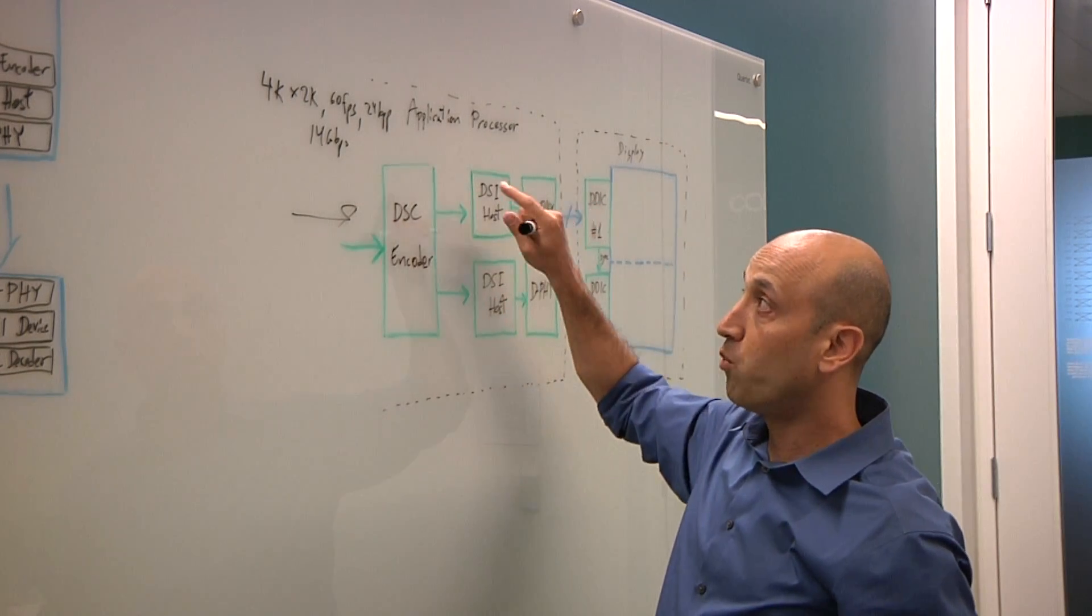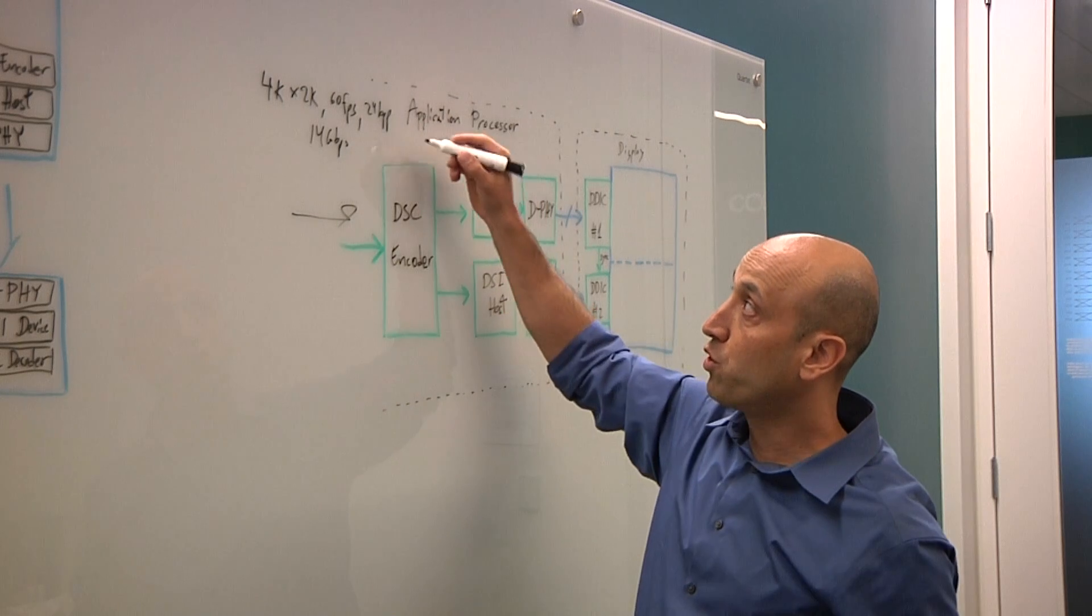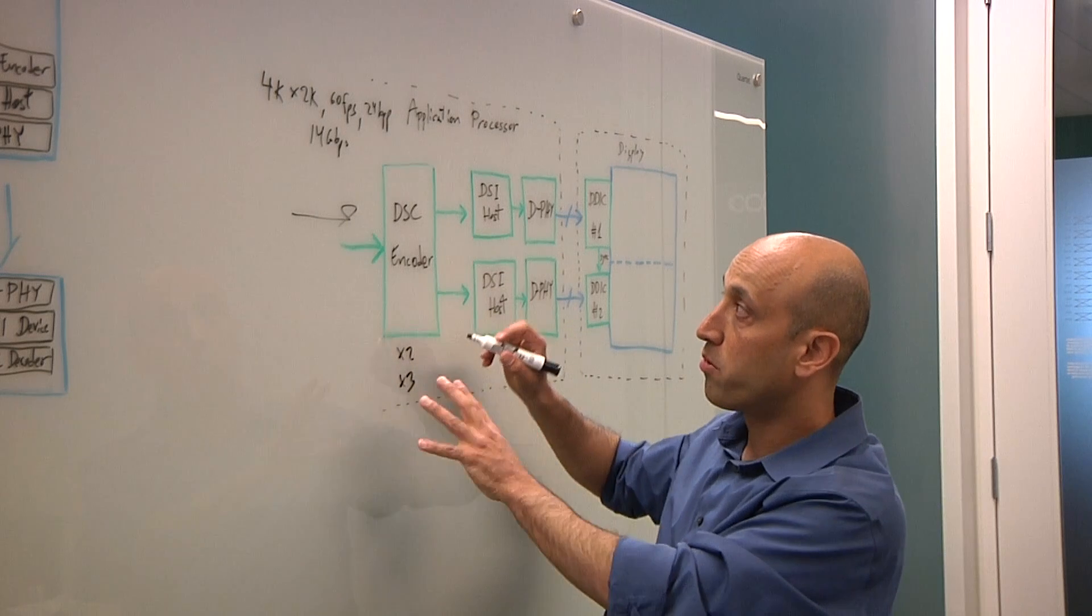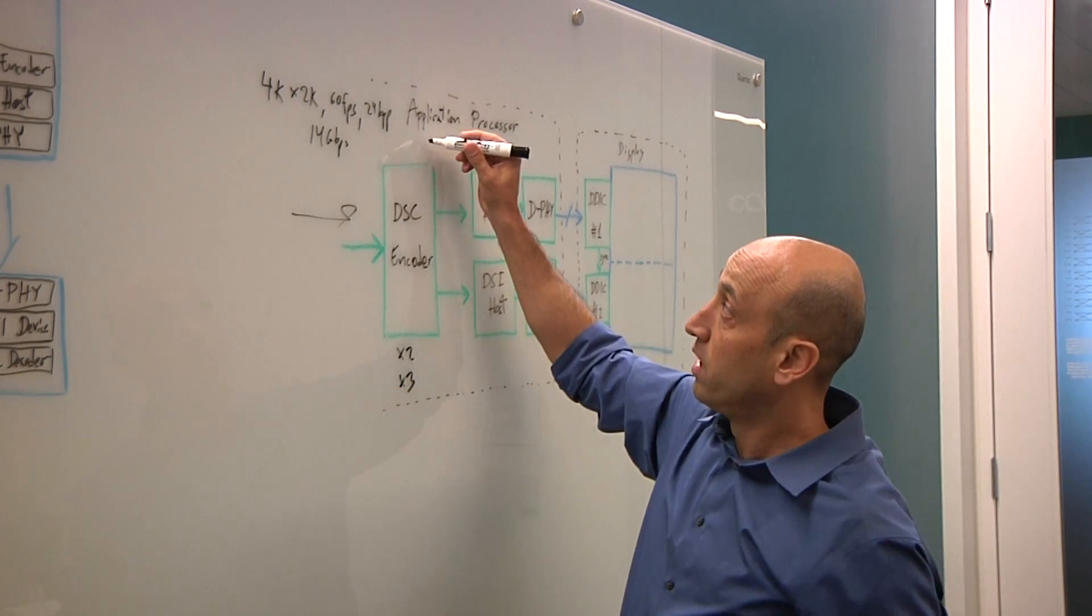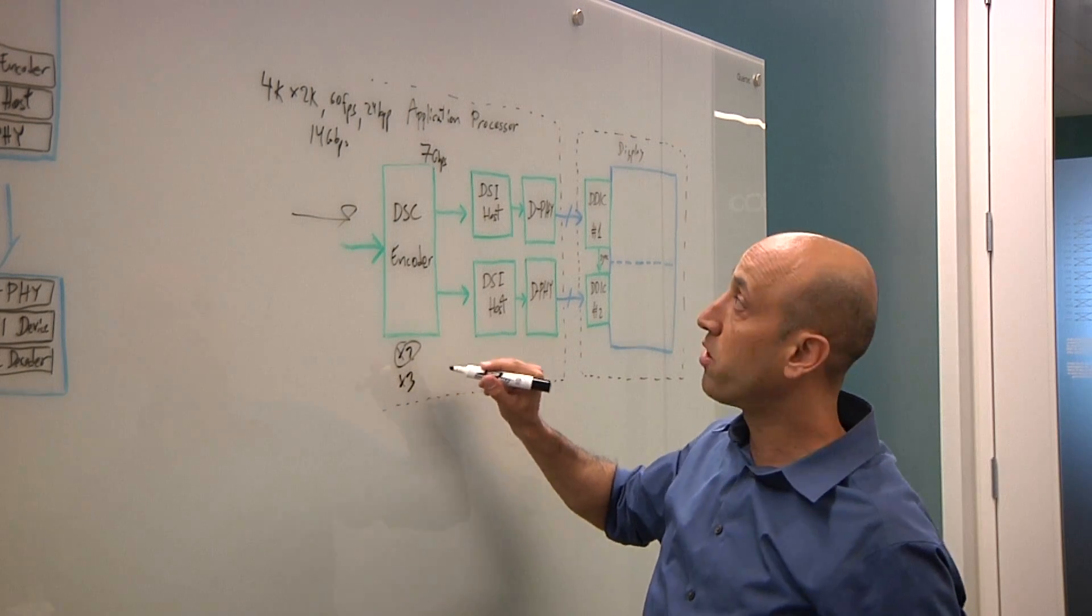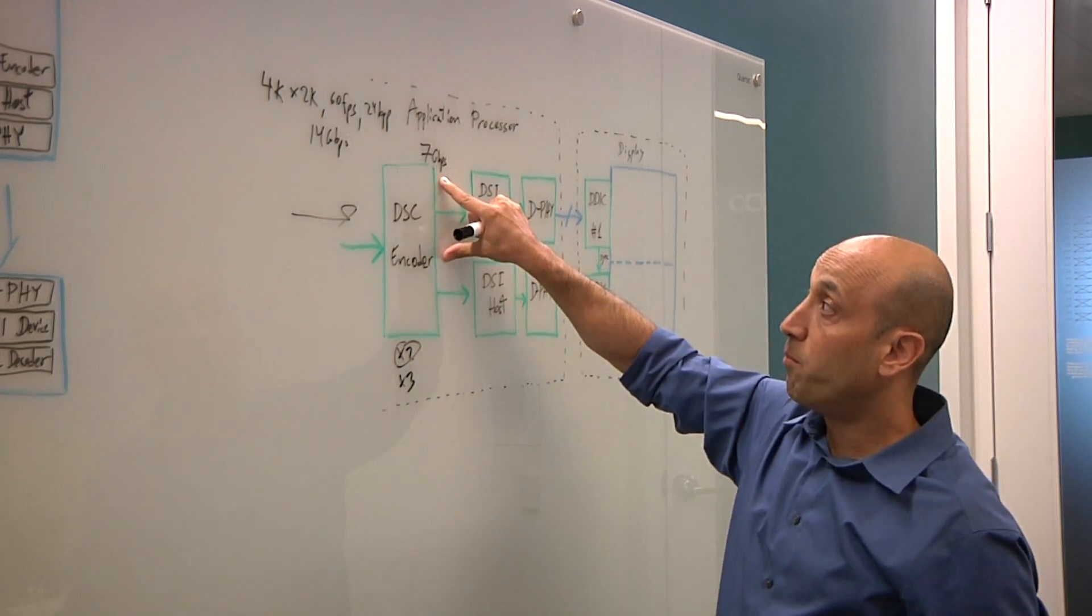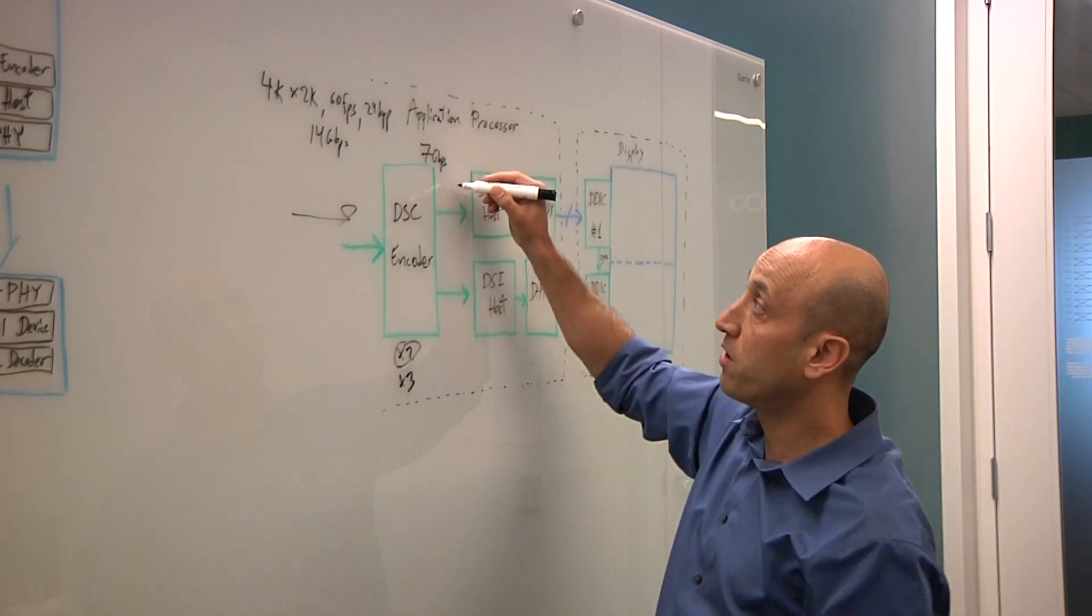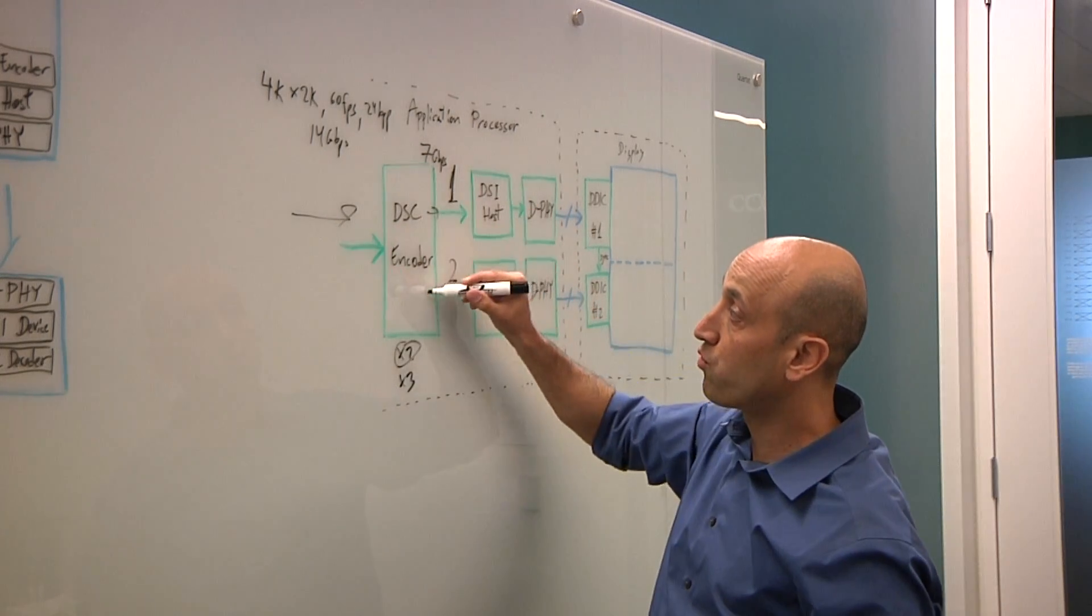What we are seeing in the implementation right now is DSC encoder is being added as a component that's allowing you to use a by-2 or by-3 compression. In this example, we use a by-2 compression. So this is all done real-time, low-latency, visually lossless kind of implementation, giving you 7 gigabits per second if you use 2x compression. What we are seeing in tablets is this kind of stream is actually then divided into two, so two halves, the first one and the second one.